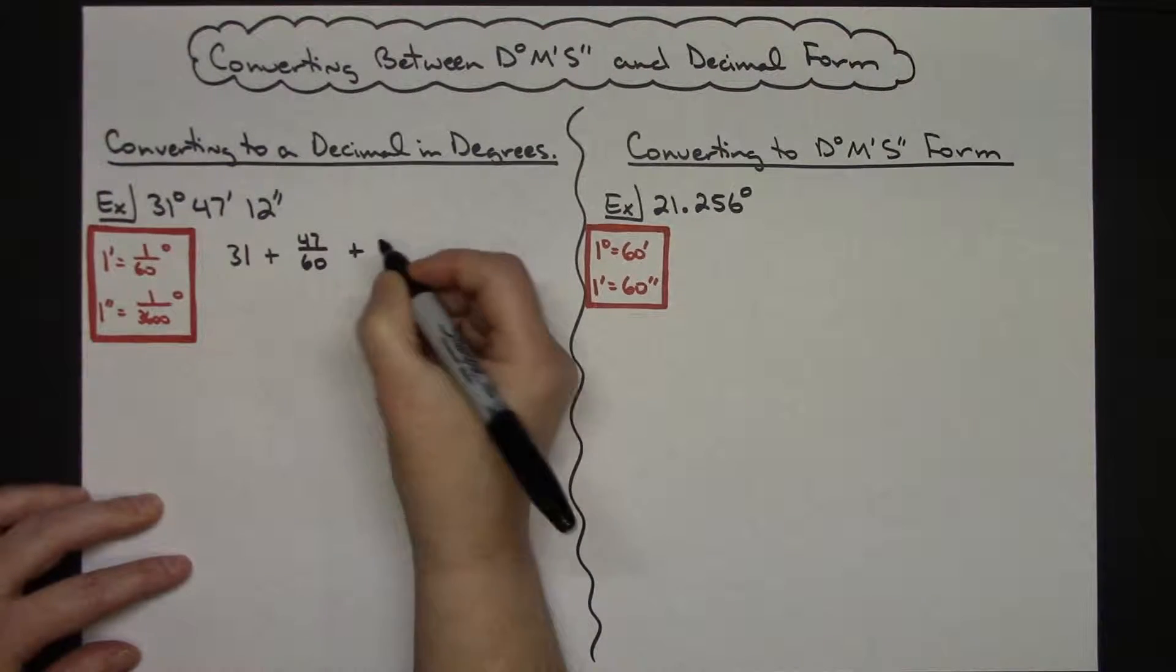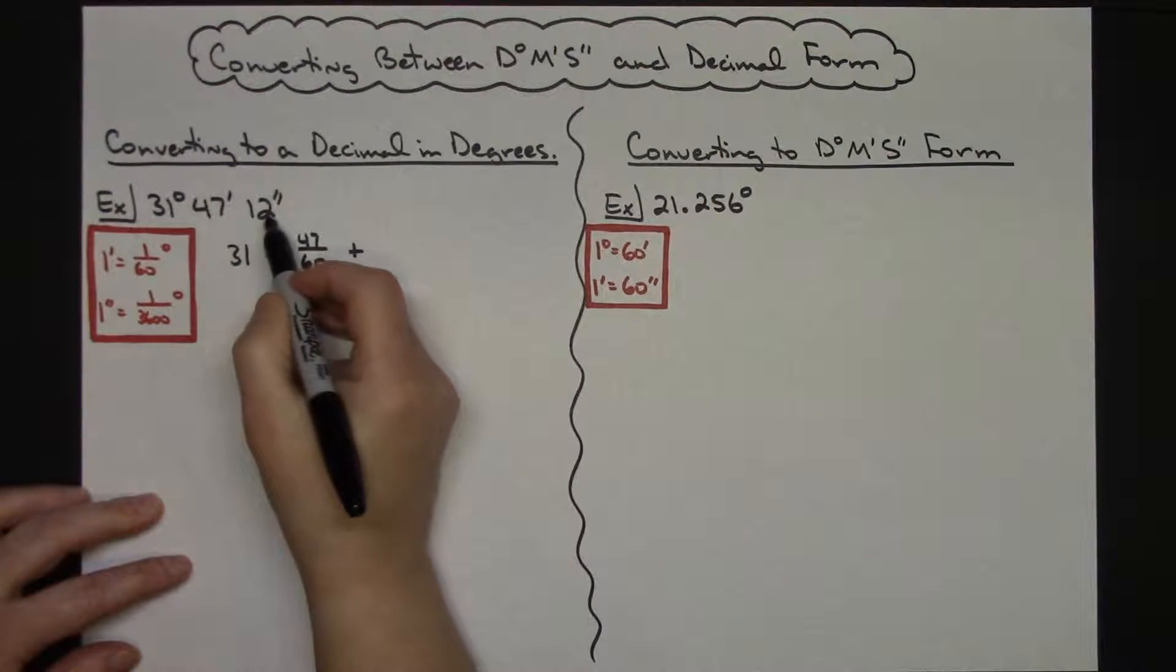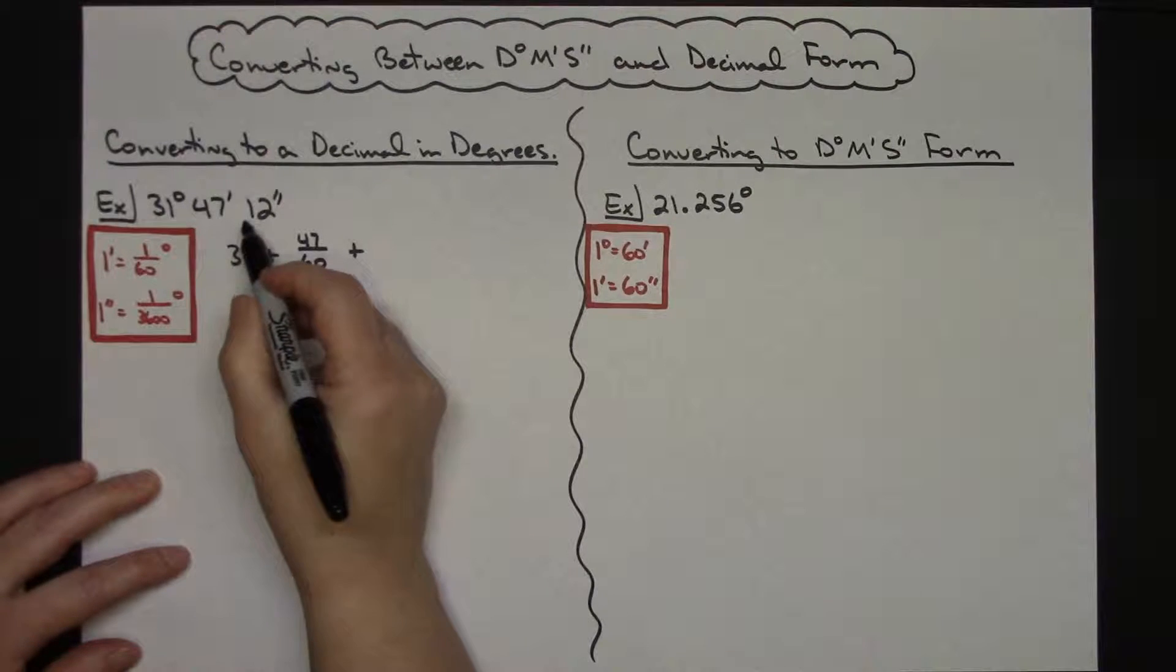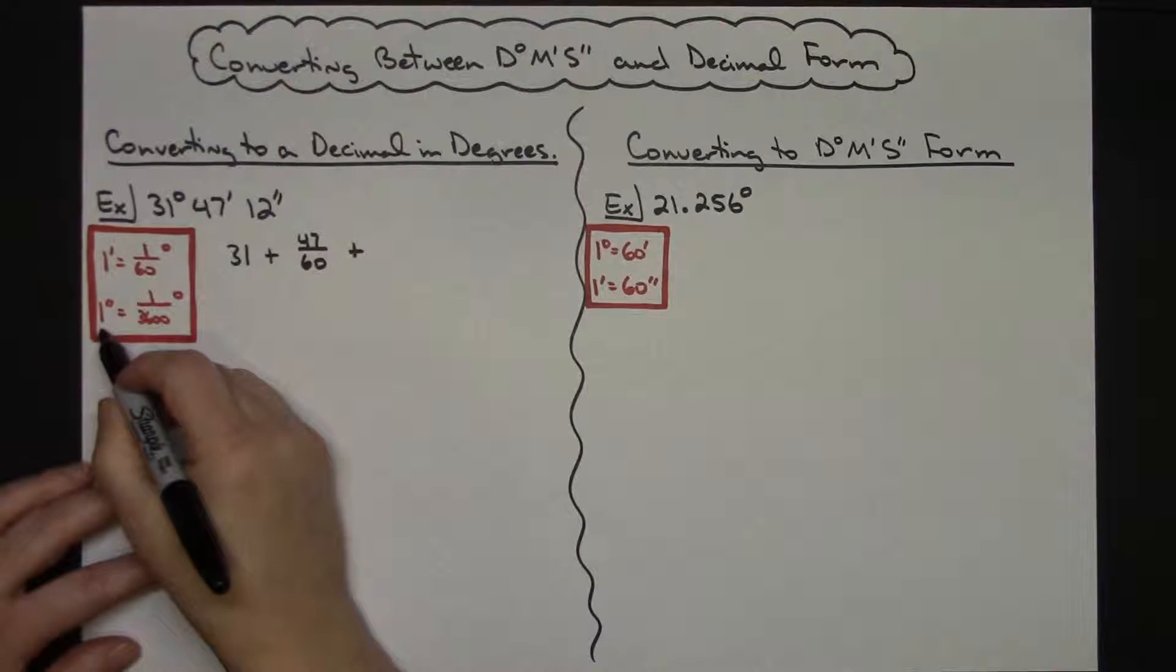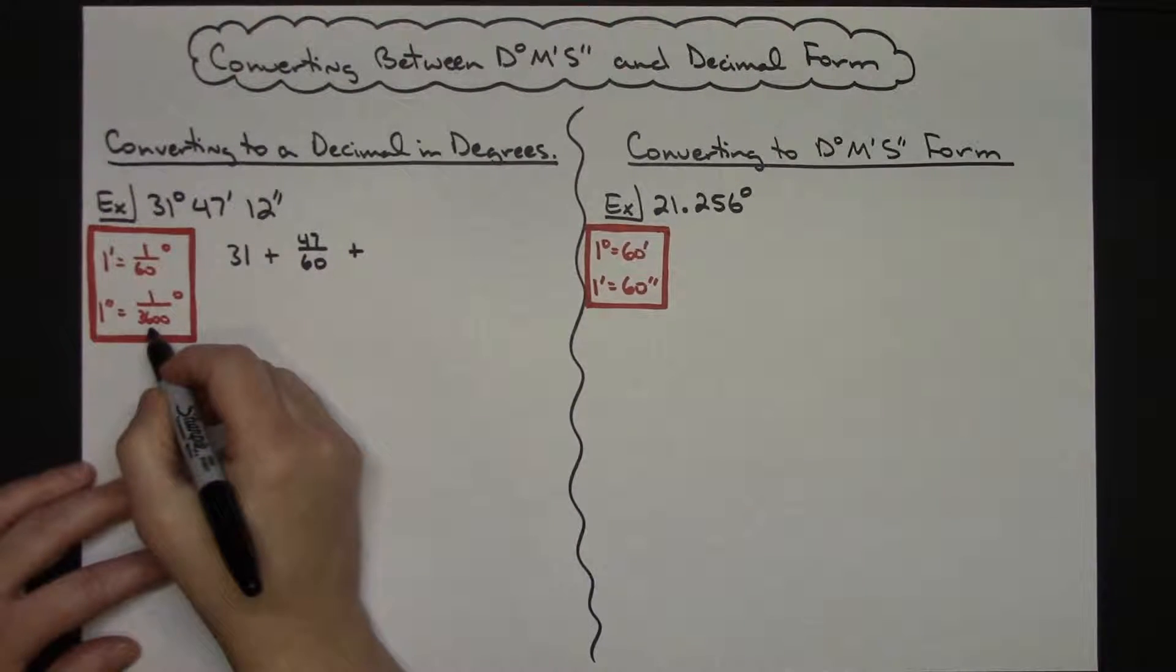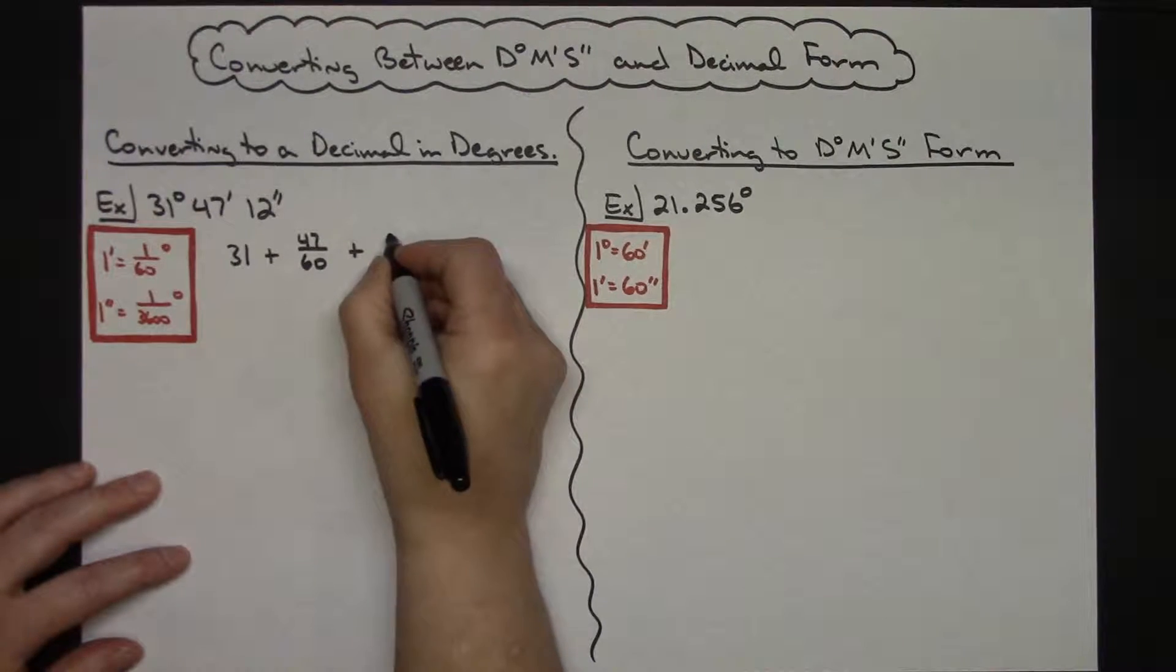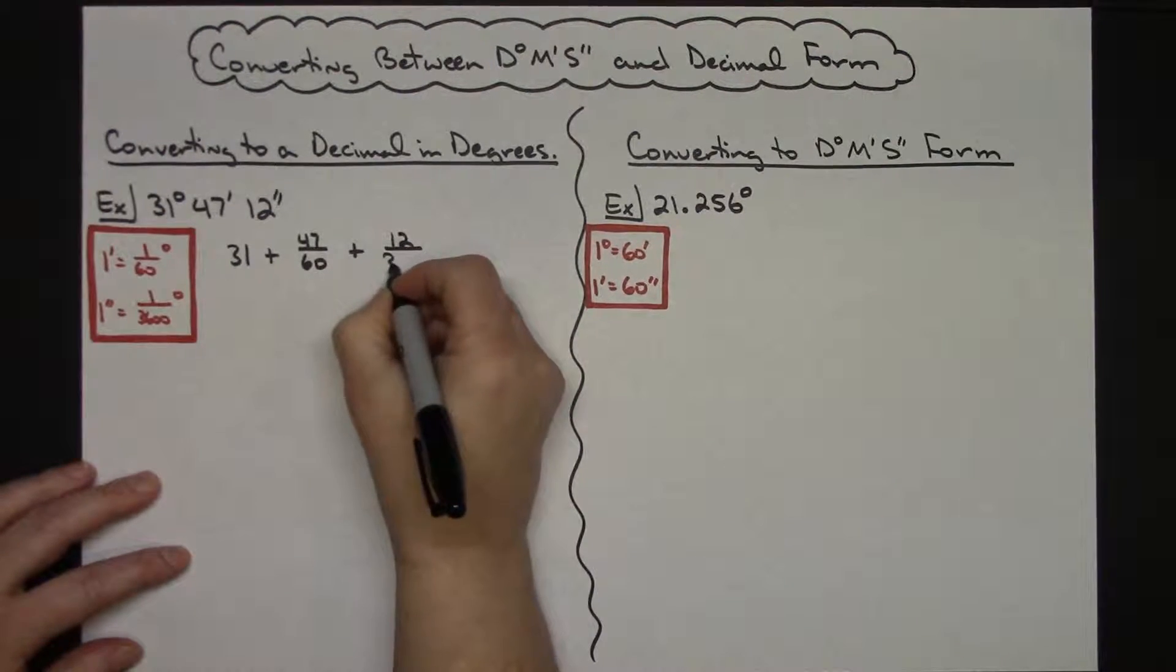And then I want to add to that whatever this 12 seconds turns out to be when I convert it to a decimal. So since one second is 1/3600th of a degree, then it's going to be 12 over 3600.